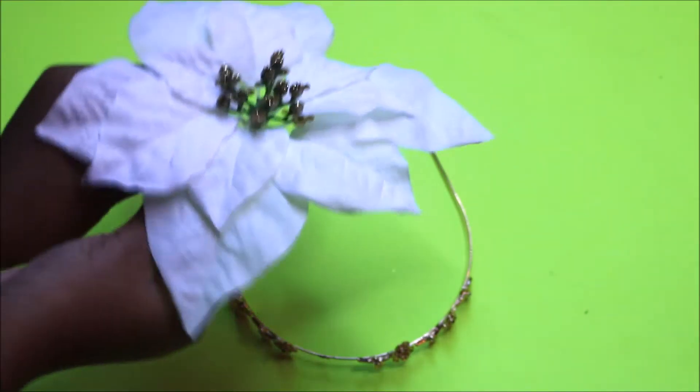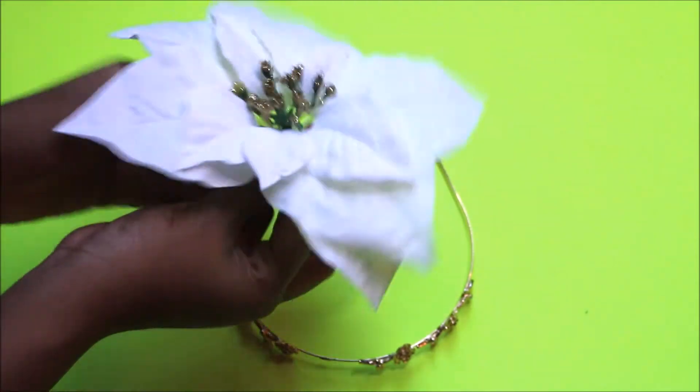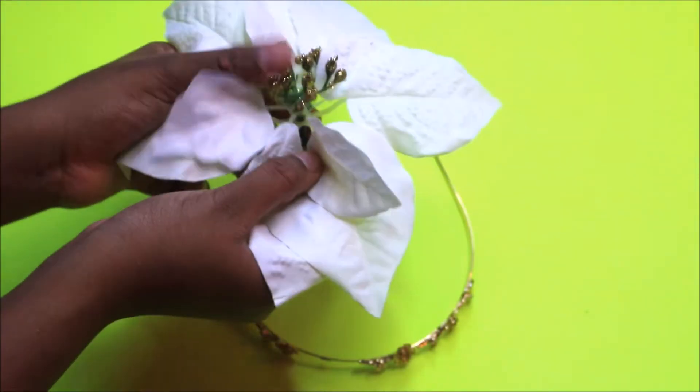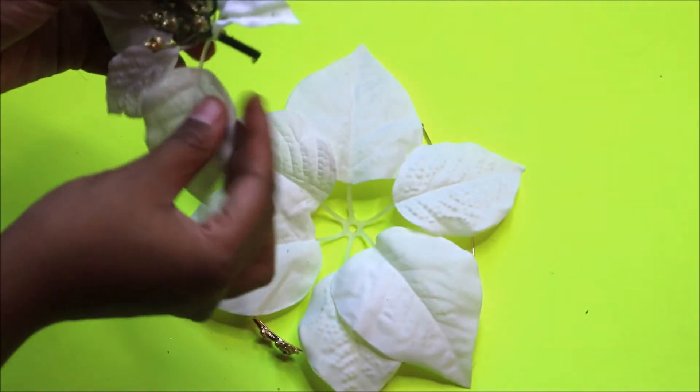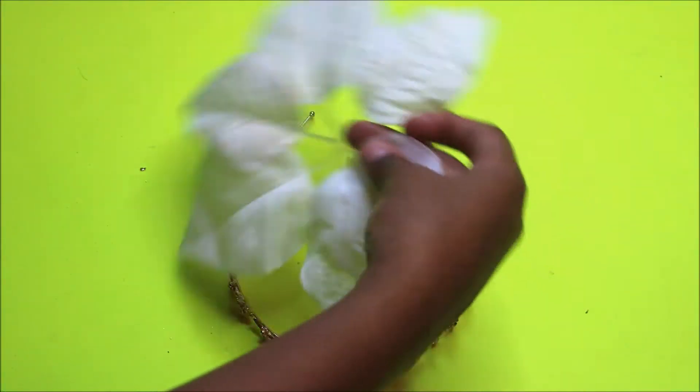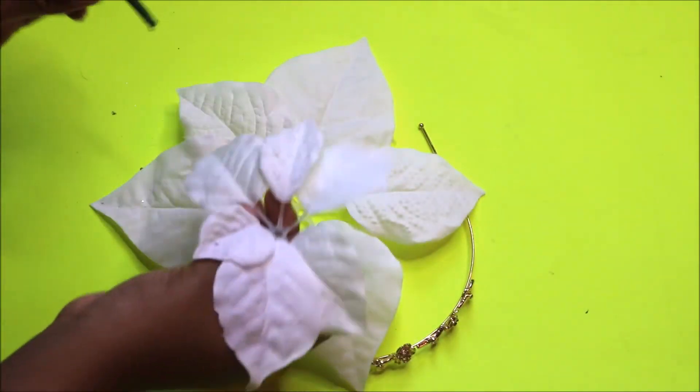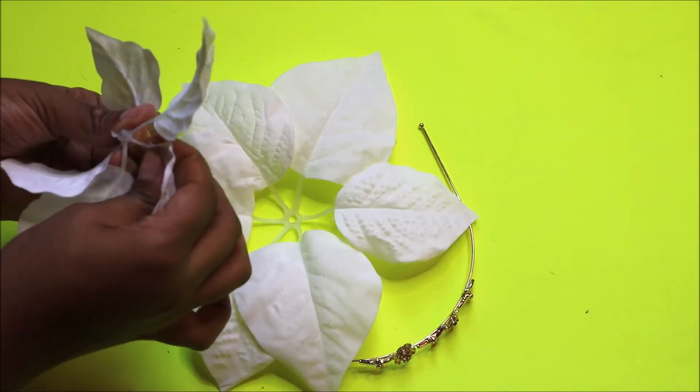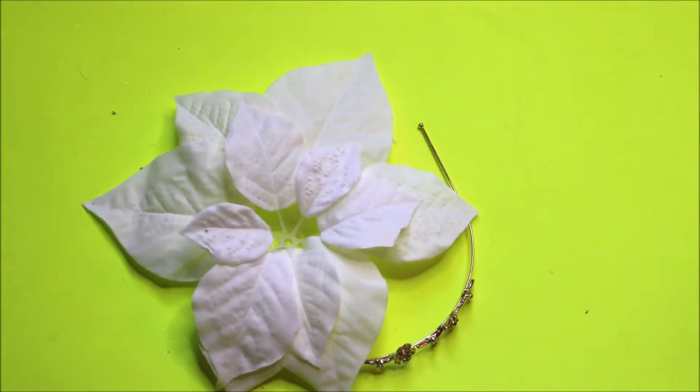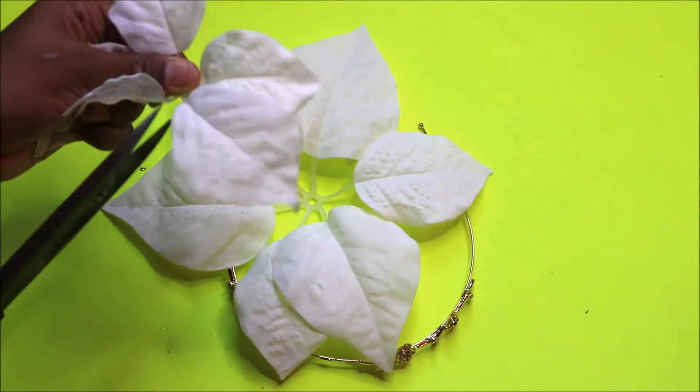So this is the only type of flower that I can find around this time of year. It's like a poinsettia flower and I'm going to start by taking the leaves off. Once you get to this point, you want to start cutting the petals off.